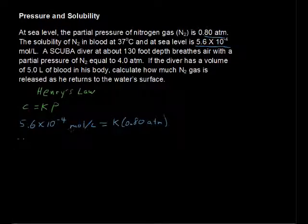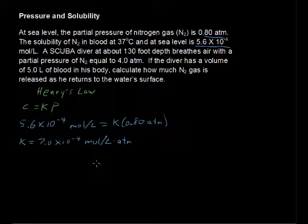Solving for that then, Henry's law constant under these circumstances equals 7.0 times 10 to the negative 4th. The units is moles per liter times atmospheres, where atmospheres is also in the denominator. Okay, we have the constant.